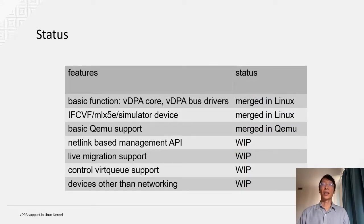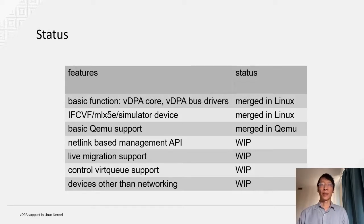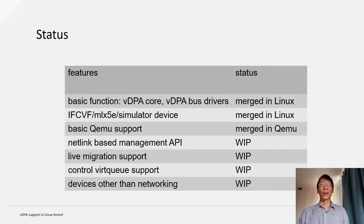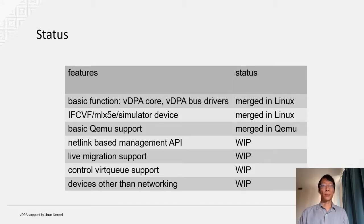Here is basically the status of VDPA support in the current Linux kernel. Basic functions such as VDPA core, bus drivers, and three VDPA parents have been merged. The basic QEMU function has been merged by QEMU. We are working on, for example, the netlink-based management API, which should be posted soon. The live migration support is also under development — we will probably start from software-assisted live migration first, which means it doesn't require any device support for dirty page tracking. QEMU will try to assist the device for dirty page tracking. After this, we will try to invent a new API for supporting dirty page tracking from the hardware. The control queue work is also being developed upstream, and we are working with vendors to make sure the framework and drivers can work for devices other than networking — we will probably start from the block device.